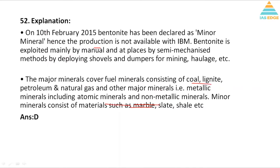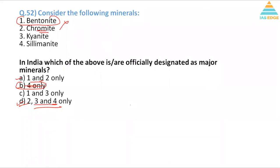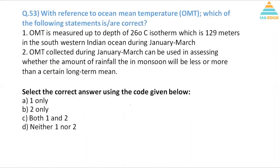Question 53, with reference to ocean mean temperature (OMT), which of the following statements are correct? OMT is measured up to depth of 26°C isotherm. Isotherm is a line which connects all surface water at the same temperature, which is 129 meters in the southwest Indian Ocean during January-March. It's a factual question. Ideally the isotherms are found at a height between 50 to 100 meters, so this is incorrect.